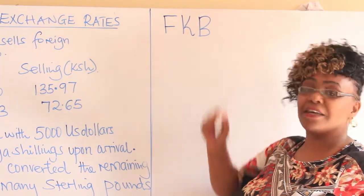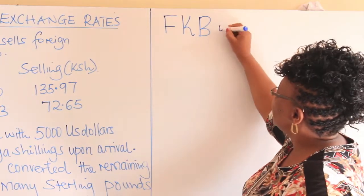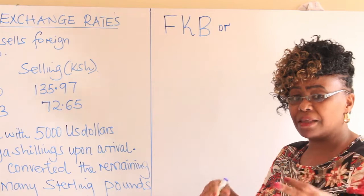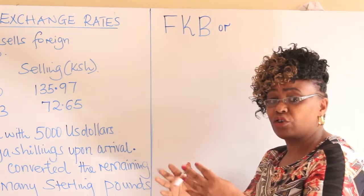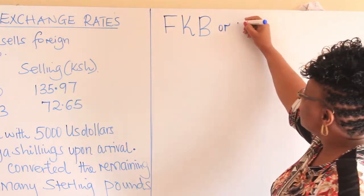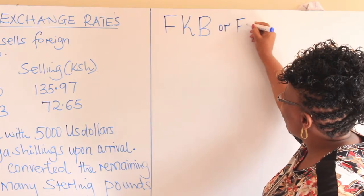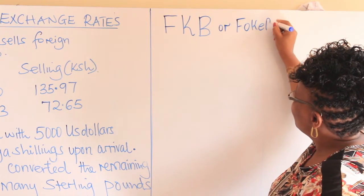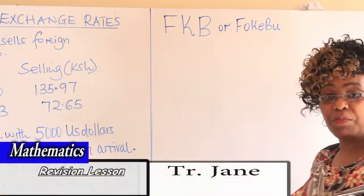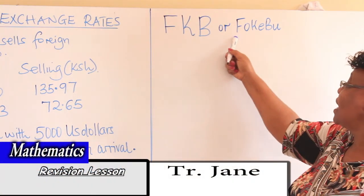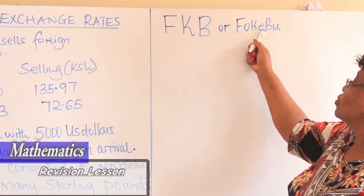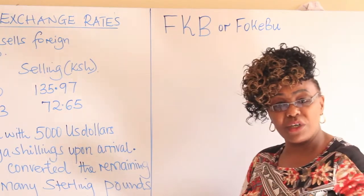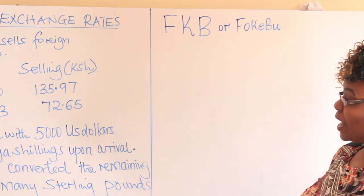FKB — Foreign to Kenya shillings, the Bank buys. Some people call it FKB, others use different acronyms, but these are just memory aids to help us handle the problems. Whichever you find easier, you can use it.